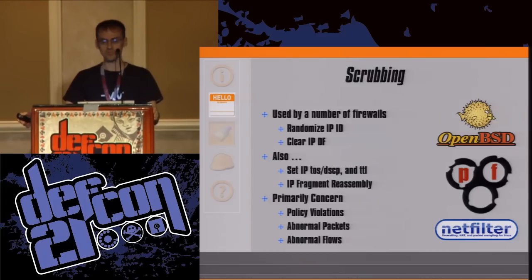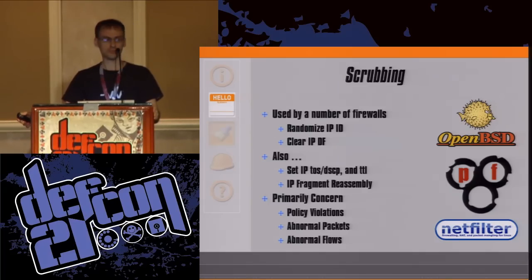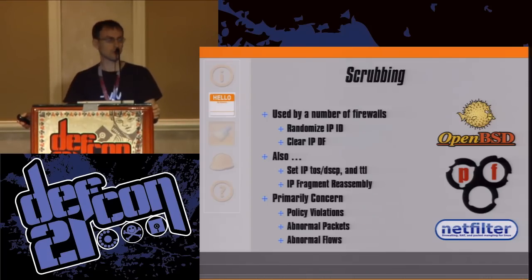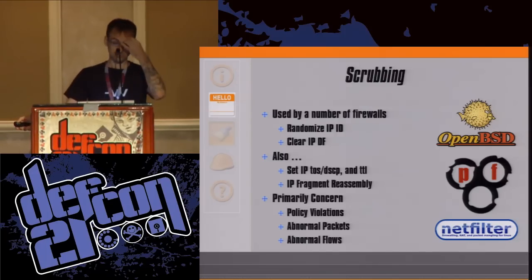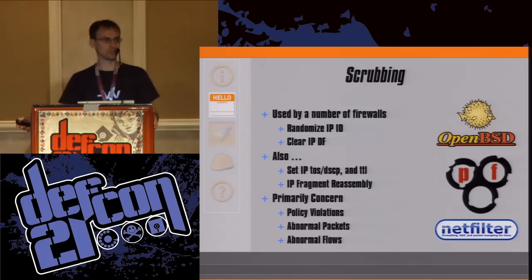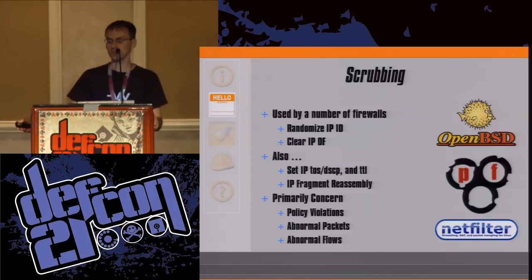The solution also allows you to set the IP type of service and the time to live. All three solutions will do IP fragment reassembly. The primary concern though, like all firewalls, is policy violations, abnormal packets and abnormal flows. There's some scrubbing with some normalization, but not enough nor the right kind of normalization — not effective for fingerprinting prevention, and not really practical, lacking the ability to cover the entire network.